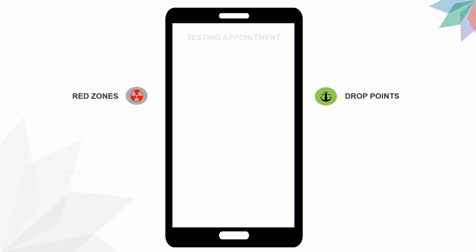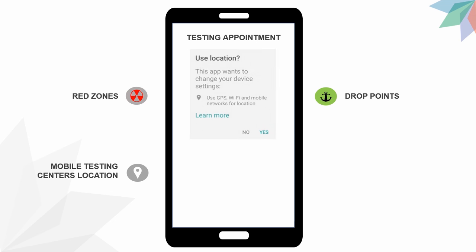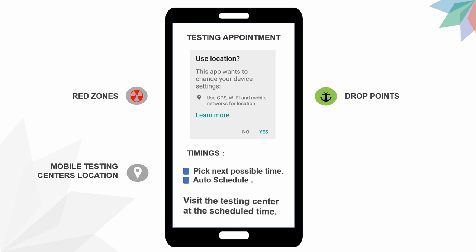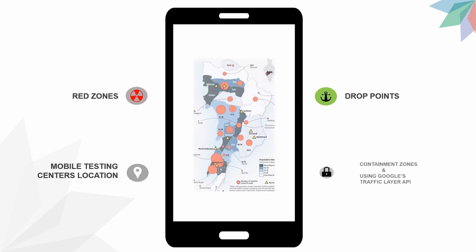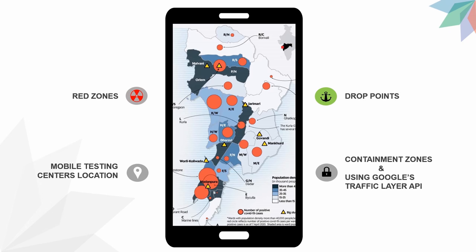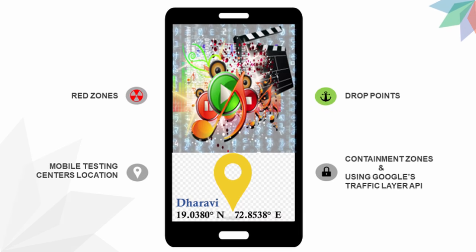Establishment of walk-through mobile testing centers. The test results will then be sent to the app with next instructions to be followed. Live map of containment zones and human traffic density.